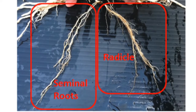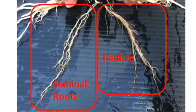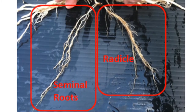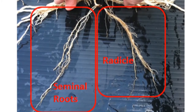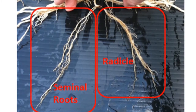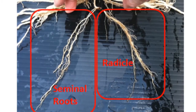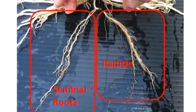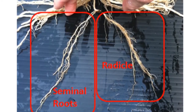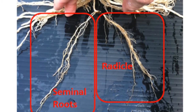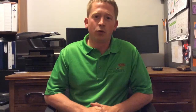The radicle is the first part of the plant to sprout from the seed. The seminal roots also originate from the seed and, together with the radicle, are responsible for early water uptake and limited nutrient uptake, while the young seedling gets most of its nutrition and energy from reserves stored within the seed.